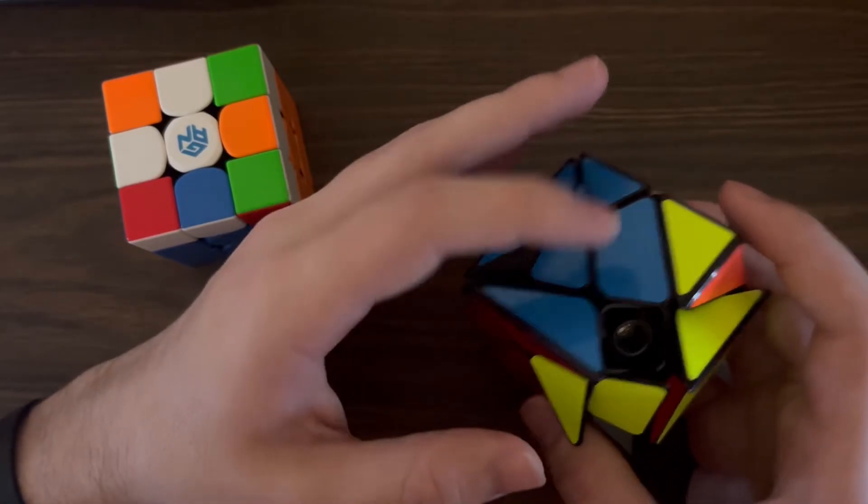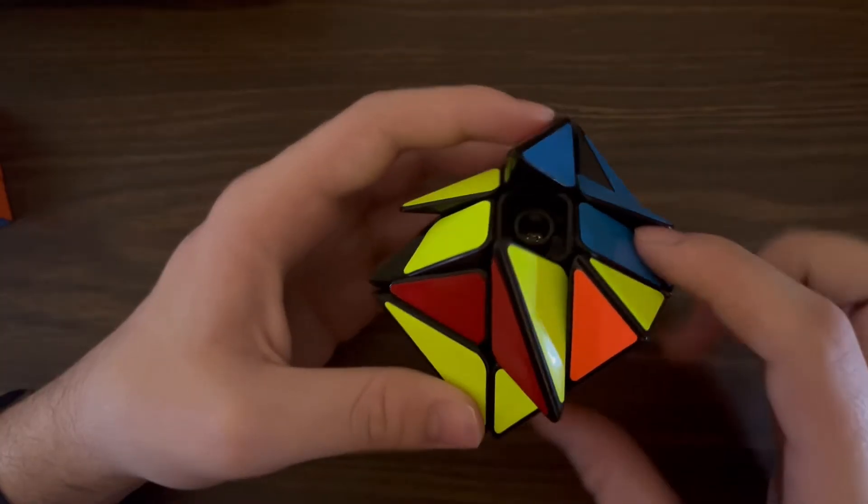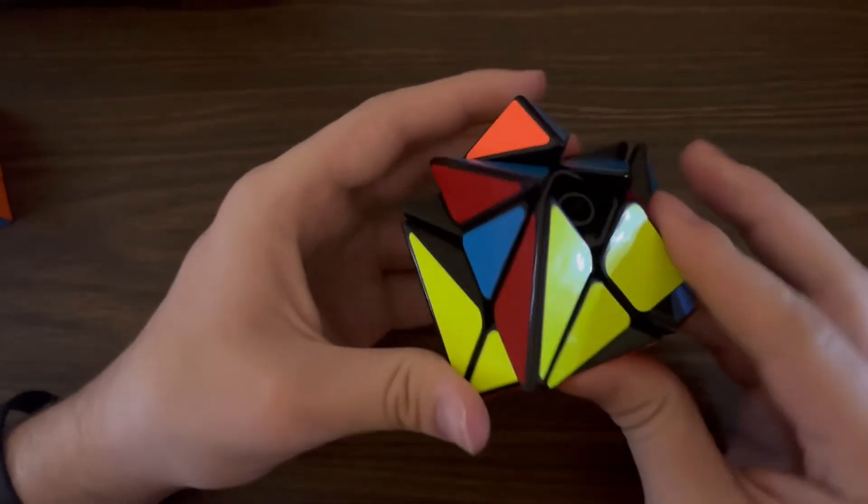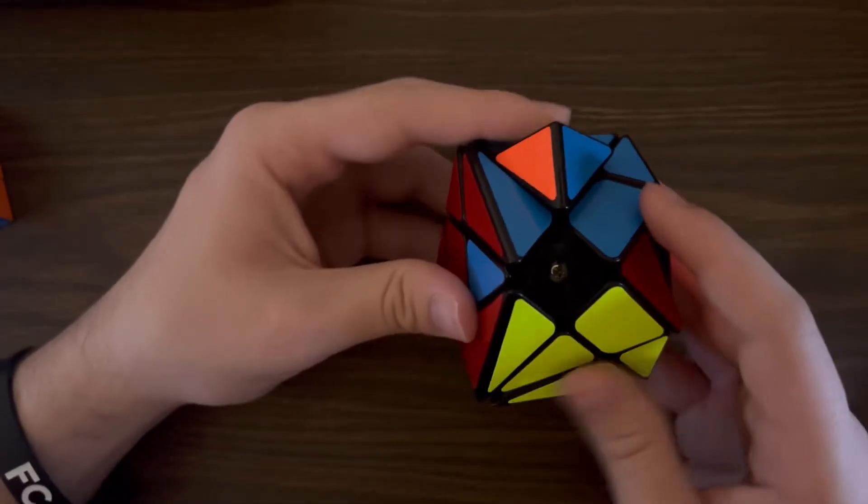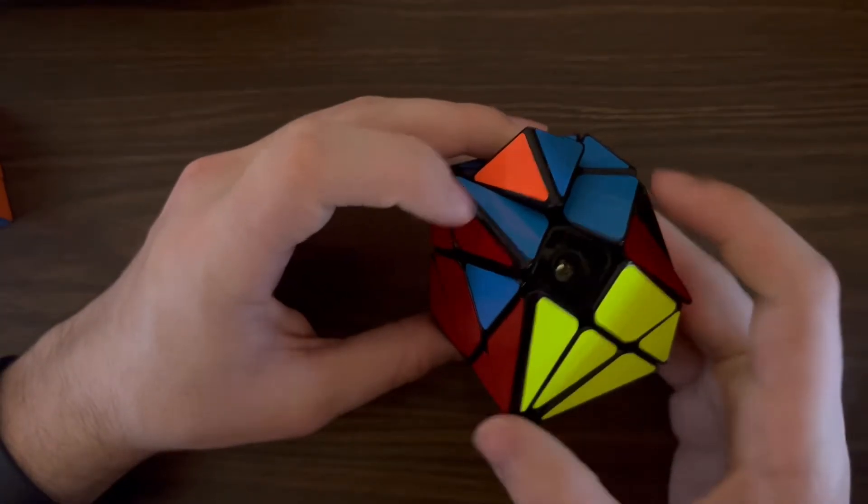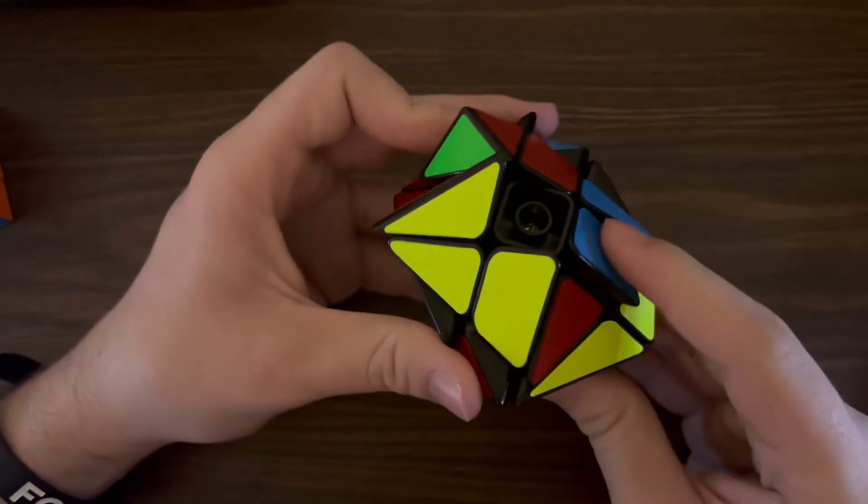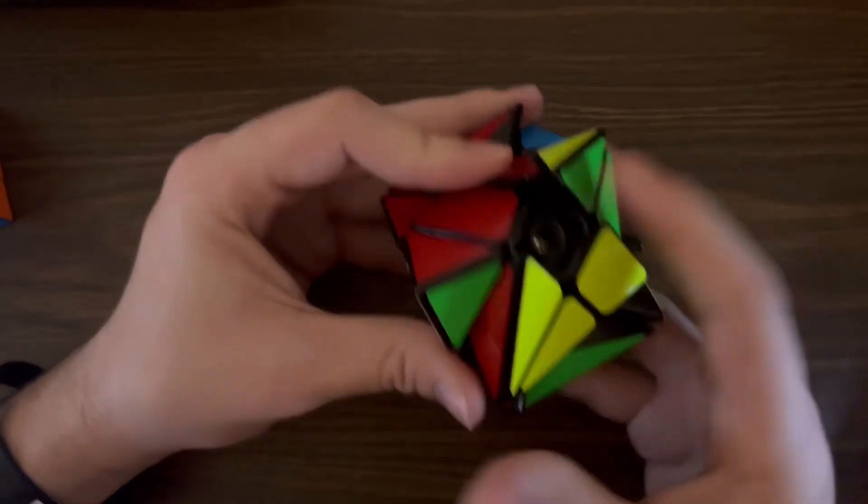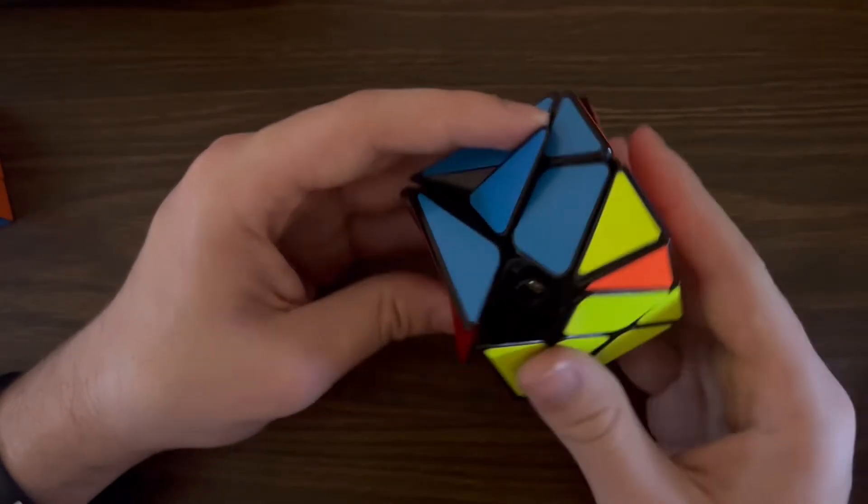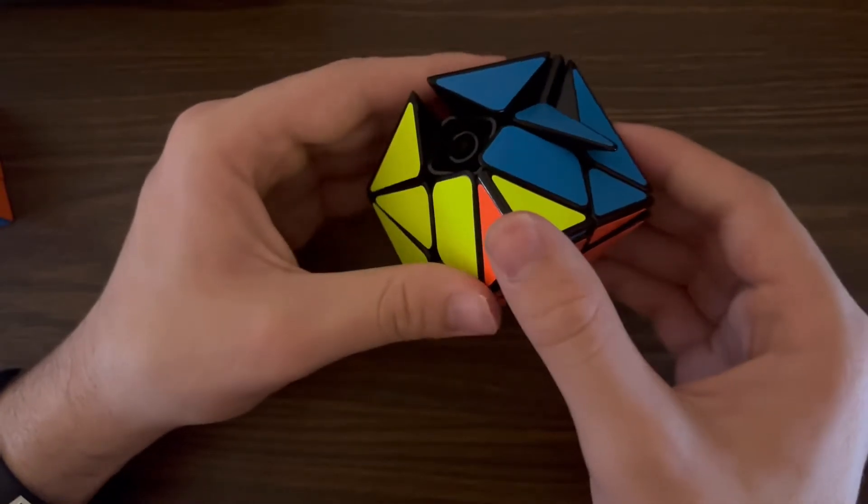And we notice these two are already in the right spot, but we need to switch these two around, the solved edge on the back and on the right. Now this is just like the corners case on the 3x3, where we have a corner in the right spot, but these three are not in the right spot. Now all that's left is to correct the corners.